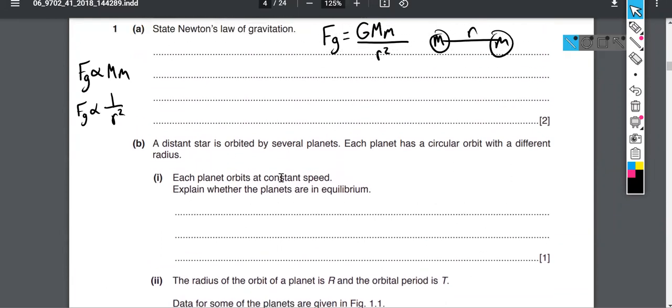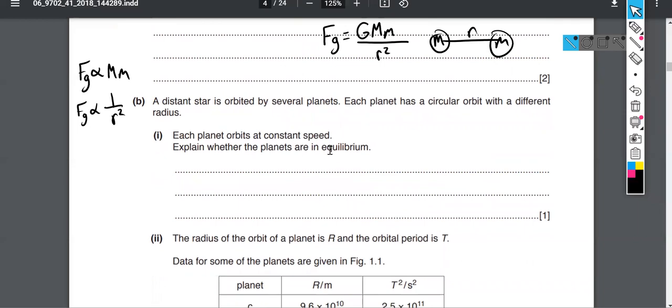All right, so part B here says a distant star is orbited by several planets. Each planet has a circular orbit with different radius. Each planet orbits at constant speed. Explain whether the planets are in equilibrium. If there is evidence of acceleration, then it's not in equilibrium. And so this was the key idea that we want to sort of really make sure that is well known. There is a force that is balanced here. Centripetal force describes the force that pushes the planets towards the center of the circle that they are sweeping out as they orbit.